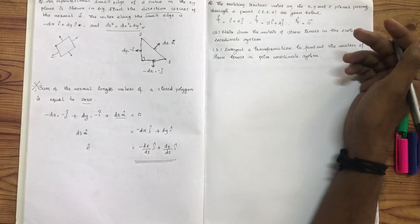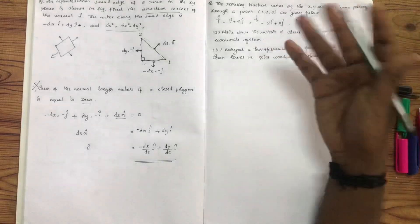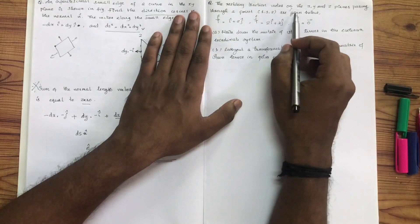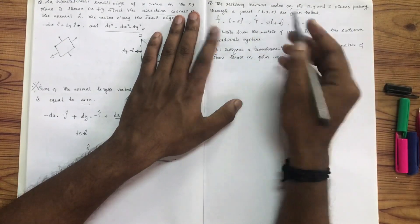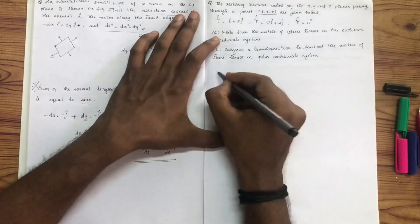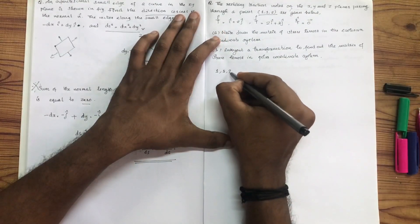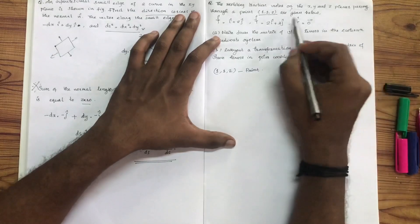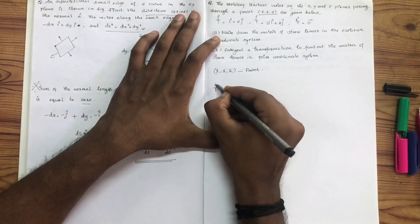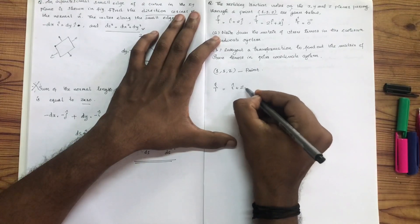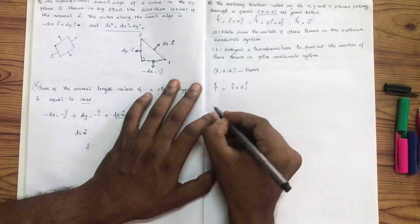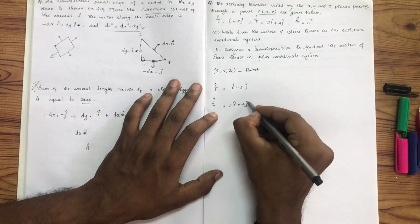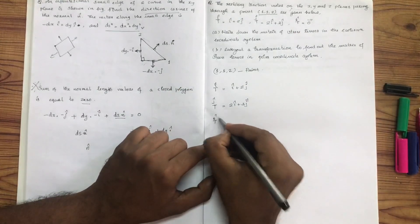We will apply it to the EMOS. The resisting traction vectors on XYZ planes passing through the point. If you want to change the point with respect to this point, this is given by: TI is equal to I plus 2J, TJ is equal to 2I plus 3J, TK is equal to 0.